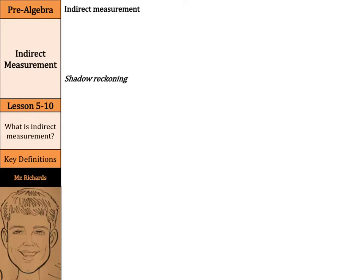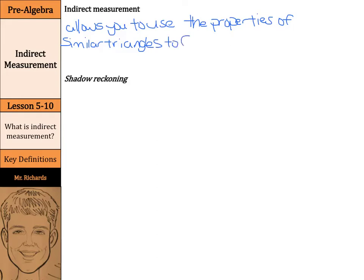First, let's define these terms. Indirect measurement allows you to use the properties of similar triangles to find measurements that are difficult to measure directly.